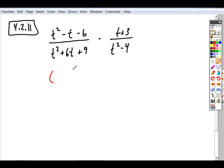So the first fraction's numerator has binomial factors, first terms of t, the last terms have a product of negative 6, a sum of negative 1, so minus 3 and a plus 2.